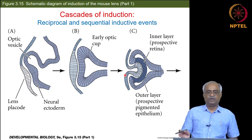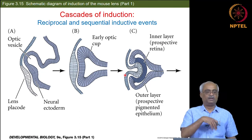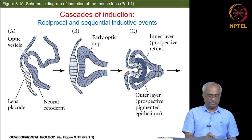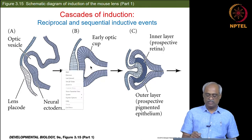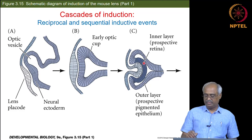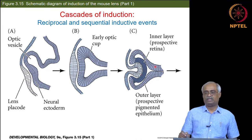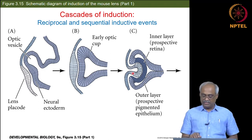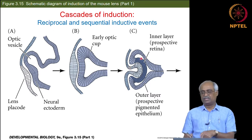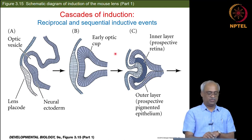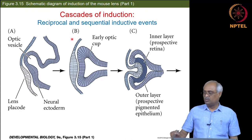The key point is that an inducer becomes a responder in the next step. At one point the optic vesicle induces; then subsequently the optic vesicle must differentiate into an optic cup. The optic cup differentiates into two kinds of cells: the neural part of the retina and the pigmented part of the retina. That differentiation is induced by the developing lens. So the originally responding tissue has now become an inducer, and the inducer has become the responder — that is what is meant by reciprocal.